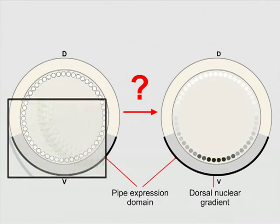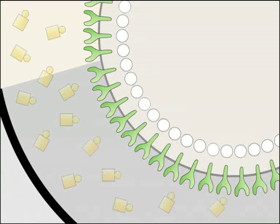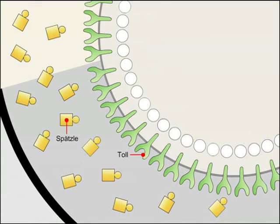Signaling from the perivitellin space to the embryonic nuclei is achieved following binding of the spetzle ligand to toll receptors. The protease easter is activated only within the ventral domain defined by pipe, where it cleaves the spetzle precursor.